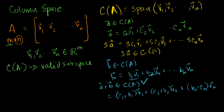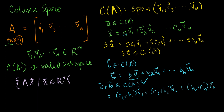Now let's think about other ways we can interpret the notion of a column space. Consider the set of all values of A·x, where A is an m by n matrix and x is any member of Rn — x must have n components for the multiplication to be well defined. So we're looking at all possible products A·x when we can pick any x from Rn.